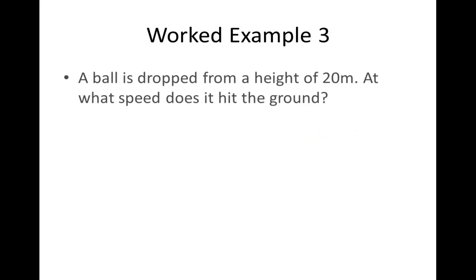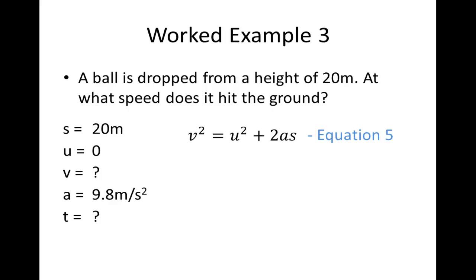One more example. Let's say a ball is dropped from a height of 20 meters. At what speed does it hit the ground? You might think this doesn't give you a lot of information. But, what we can say is the distance is 20 meters. It is dropped from an initial velocity of zero. We want to find out what the velocity is. And the acceleration will be gravity, which is 9.8 meters per second squared. So, we can discard T and use the fifth equation of motion. And inserting the values, what you find is that it will hit the ground at a speed of 19.8 meters per second.